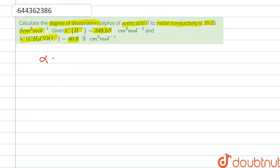We have to calculate degree of dissociation, that is alpha, which is equal to molar conductivity upon molar conductivity at infinite dilution.